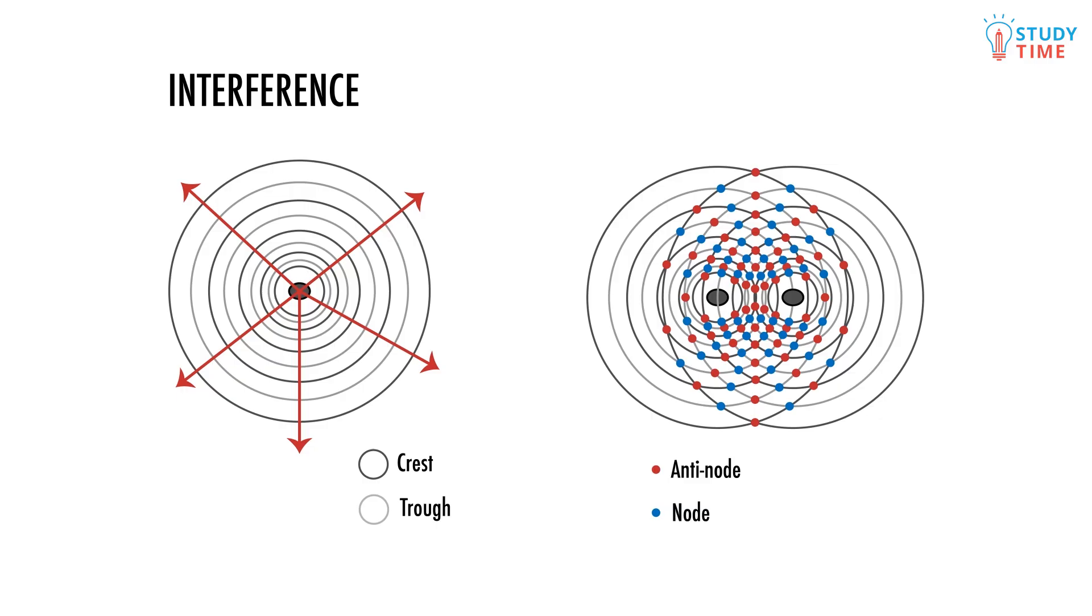On the other hand, wherever a crest meets a trough, or a trough meets a crest, we have got destructive interference, or a node. At nodes, the waves cancel, and we don't get any movement on the water at all. It will be perfectly flat. The nodes and antinodes will be in special patterns of straight lines, like this.